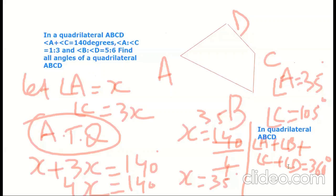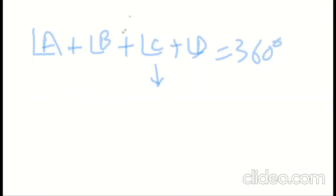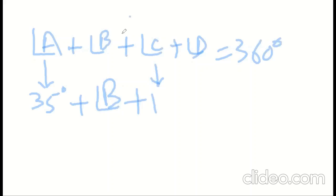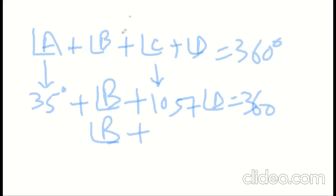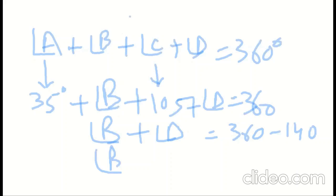In quadrilateral ABCD, angle A plus angle B plus angle C plus angle D is equal to 360 degrees. Here angle A is 35 and angle C is 105. So angle B plus angle D will be 360 minus 140, which gives us angle B plus angle D equal to 220 degrees.